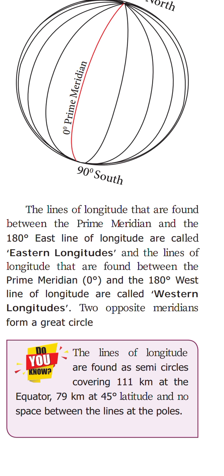The lines of longitude found between the prime meridian — zero degree — and the 180 degree west line are called western longitude.